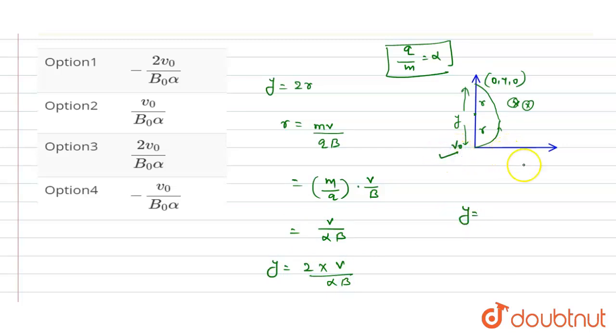The initial velocity is v0, and initial magnetic field is B0. So we can write 2v0 divided by alpha into B0. Therefore, the correct option is option third. I hope you understood, thank you.